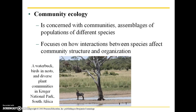Community ecology is one step further up and is concerned with communities, which are assemblages of populations of different species. Community ecology focuses on how interactions between species affect community structure and organization. People that study community ecology might be concerned with predator-prey cycles, nutrient cycling within a community, and mutualistic or parasitic relationships between multiple species.